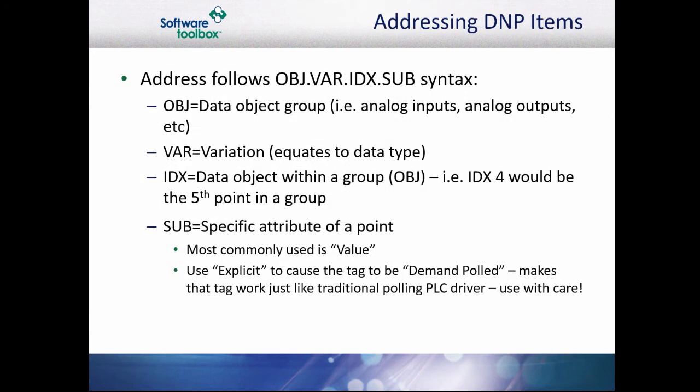DNP3 items are addressed with a four-part address: object.variation.index.subtype (or subattribute). The object is the data object group to which the item belongs. Variation defines the default data type for the item. Index is the data object within the group — for example, the fifth point in the group would have an index of 4 because indexing, as well as variations, start at 0. The subattribute or subtype is the attribute you wish to read for the specific index or point. Most often, you will use dot value to read the index value.